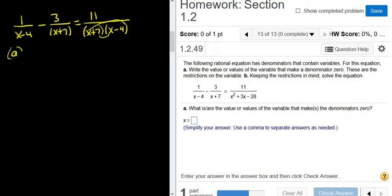So part A wants us to identify the values that make the denominator 0. You can easily tell that it's 4 and negative 7.